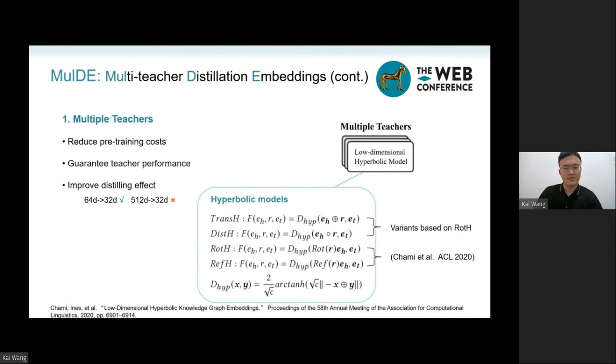RotH and RefH are proposed in the recent ACL 2020 paper. And we further add two hyperbolic variants, TransH and DistMultH, using two popular scoring functions similar to TransE and DistMult.